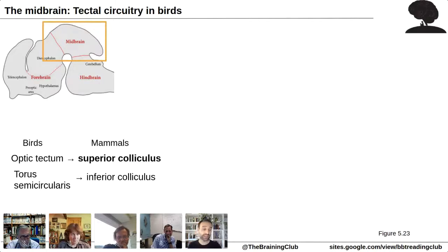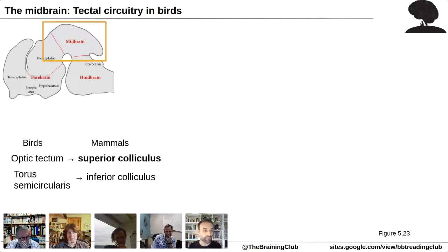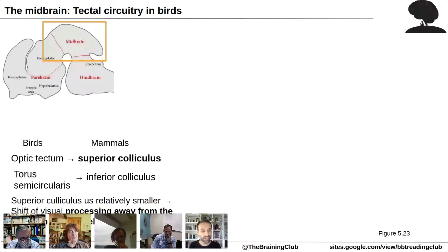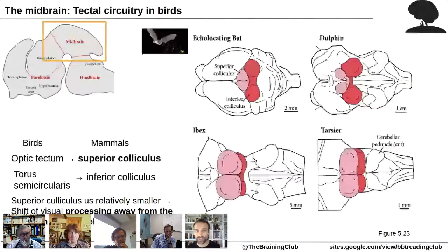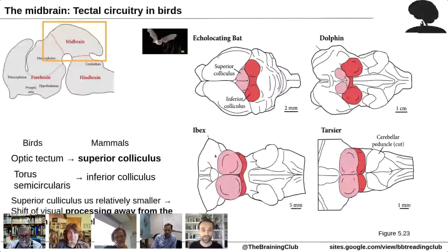In mammals the superior colliculus kind of loses relevance, probably because there was a shift toward the forebrain for processing visual information. The superior colliculus still guides gaze, but fine discrimination of the visual scene is done by the forebrain. In echolocating bats and dolphins the inferior colliculus is very important since auditory processing is critical, while in more visual animals like the ibex and tarsier the superior colliculus is larger.